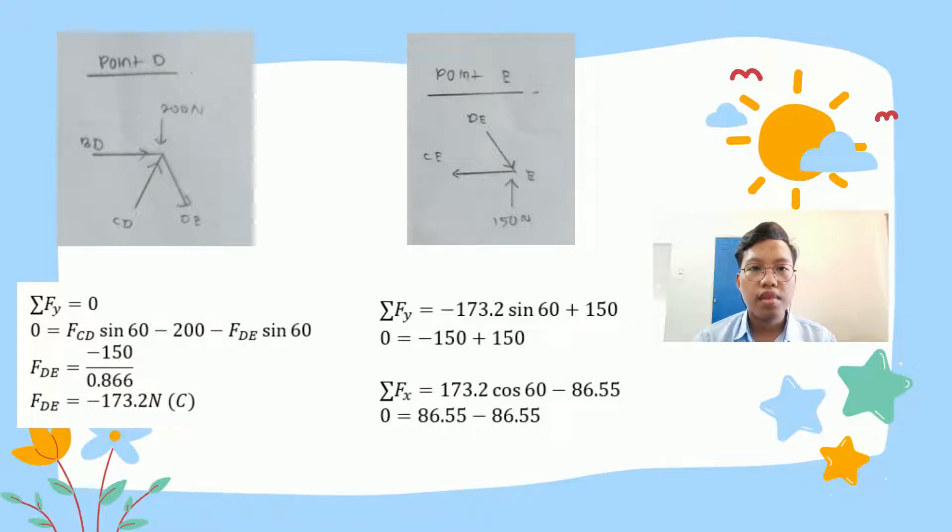Next is point E. At point E, we already have the values of force DE and force CE. If we substitute into the equations for sum of force Y and sum of force X, it will still equal zero because we already have the values at each of the members. That's all from me.